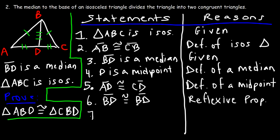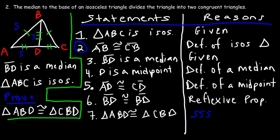Now we can write our final statement, statement seven: triangle ABD is congruent to triangle CBD. The reason is the side-side-side postulate, using statements two, five, and six to reach that conclusion. And that's it.